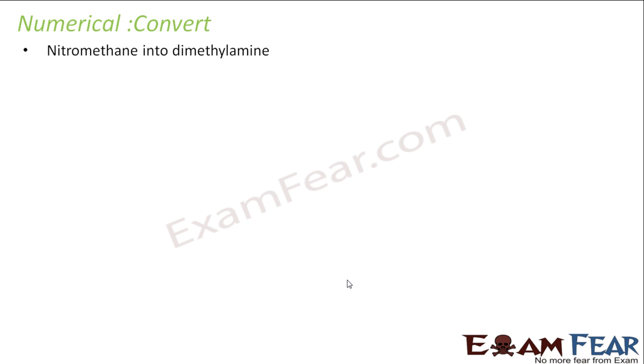So if you convert nitromethane to dimethylamine, I have this nitromethane to dimethylamine. I have to convert this, so first NO2 I have to convert to NH2, that is pretty easy. I have this NO2, I can just react with Sn and HCl, this becomes CH3NH2.